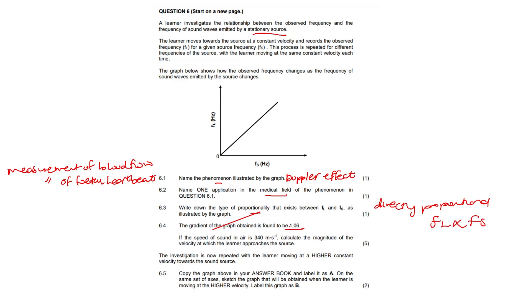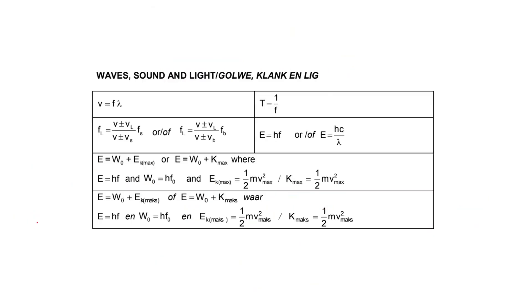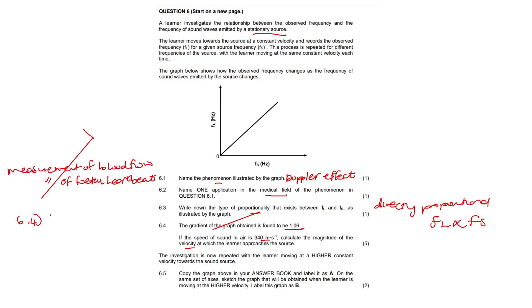Then they say the gradient of the graph is 1.06. If the speed of sound in air is 340 meters per second, calculate the magnitude of the velocity at which the learner approaches the source. So I'm just going to jot it down here at the bottom, 6.4. I'm going to write down my formula because I do get a mark for the formula. I want FL over FS on the opposite side. I'm going to rewrite it because that is the gradient, FL over FS. They've given it to us as 1.06.